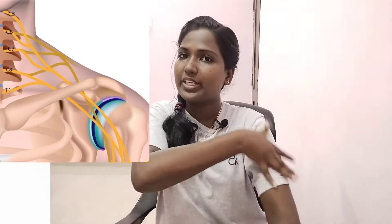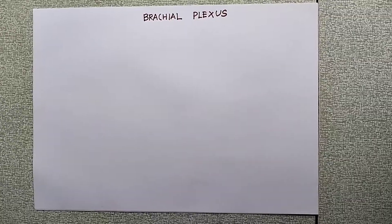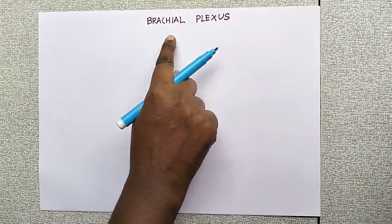This is the upper extremity nerve supply. Roots, trunks, divisions, and cords are the main components. Let's look at the brachial plexus.